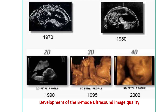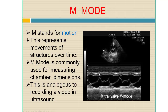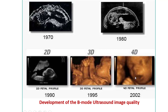Here we can see the development of B-mode ultrasonography image quality over time: from 1970, to 1980, to 1990. By 1995, 3D ultrasonography for fetal profiling was available, and by 2002, 4D ultrasonography had been introduced.